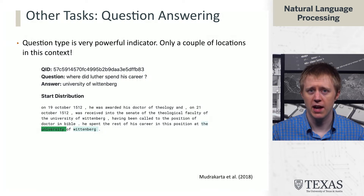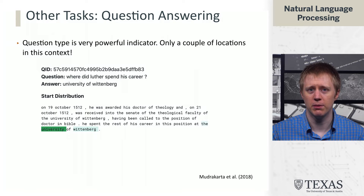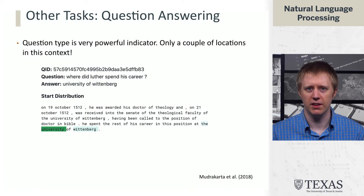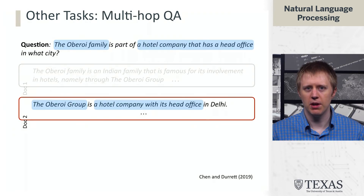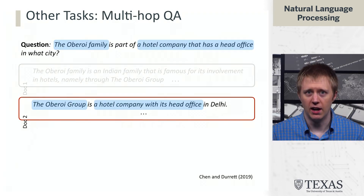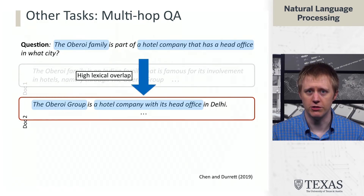So the model in this case starts to learn these shallow cues, similar to what we saw in NLI. We also talked about issues in multi-hop question answering, where the model can jump directly to the answer based on things like lexical overlap, rather than performing the intended multi-step reasoning.